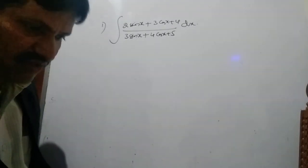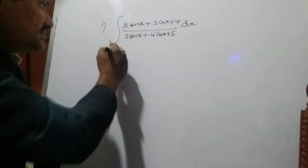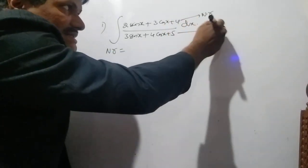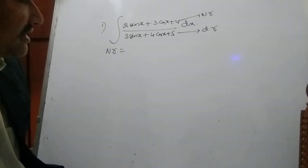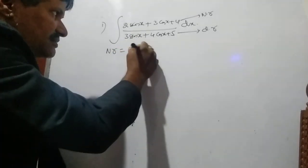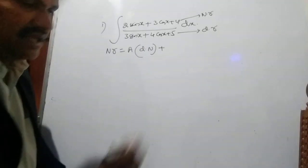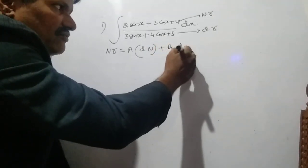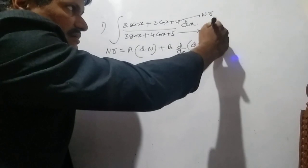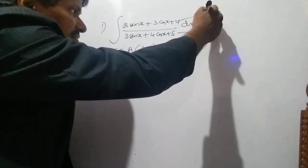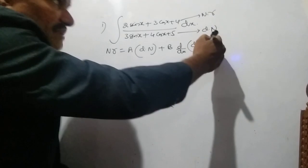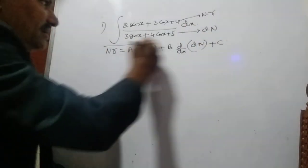The integral of (2 sin x + 3 cos x + 4) over (3 sin x + 4 cos x + 5) dx. This is the seventh type. The formula is: whenever the numerator equals a times the denominator plus b times d/dx of the denominator plus c.